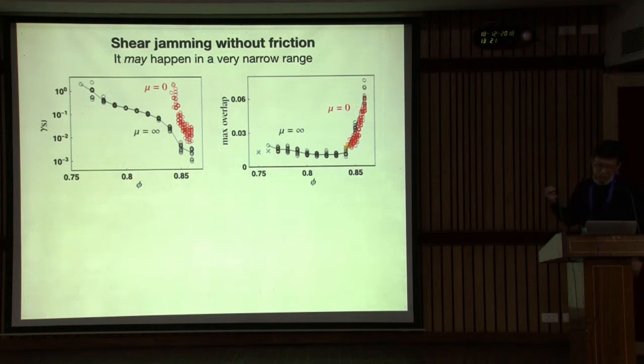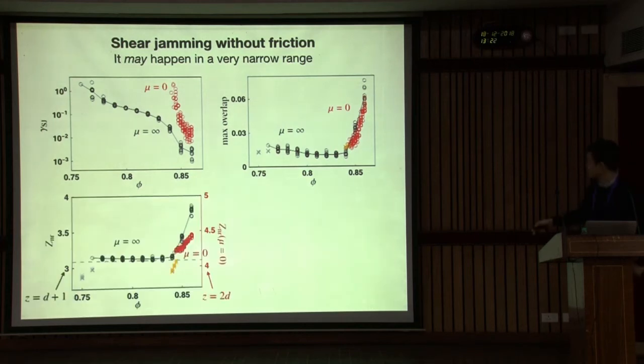And next question is, does shear jamming survive in the limit of frictionless system? To answer this question, I just ran some simulation without friction and compared with infinite friction result. I observe this kind of data, but in very narrow range. Interesting thing is, actually, if I check the contact number, they already stay in this isotropic jamming state.